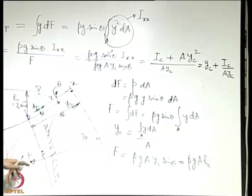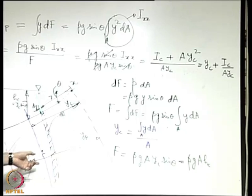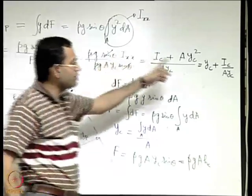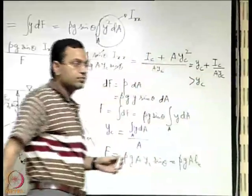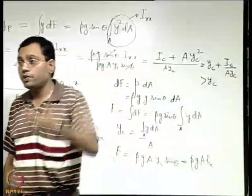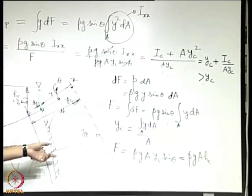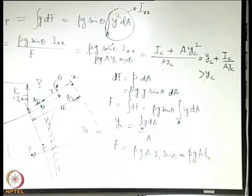This point P is given the special name 'center of pressure' in fluid statics — it is the point through which the resultant of the distributed force due to pressure passes. We can clearly see that yp equals yc plus Ic over (A yc), which is always greater than yc since Ic over (A yc) is a positive term. Therefore, the center of pressure lies below the centroid, which is a very important observation.